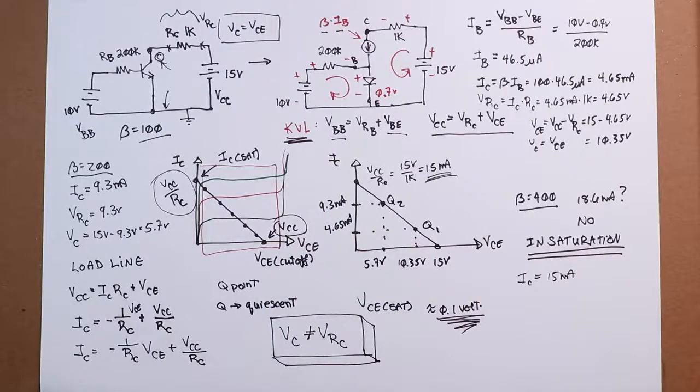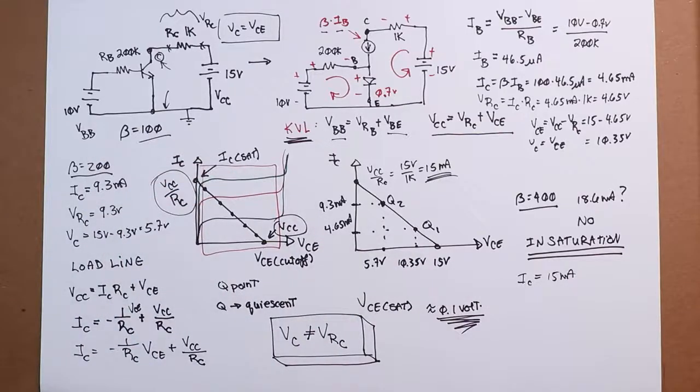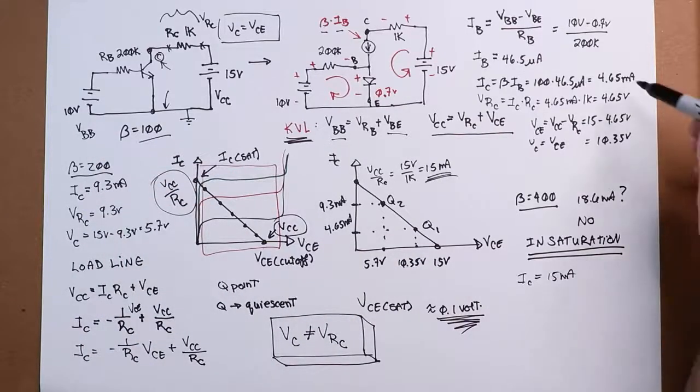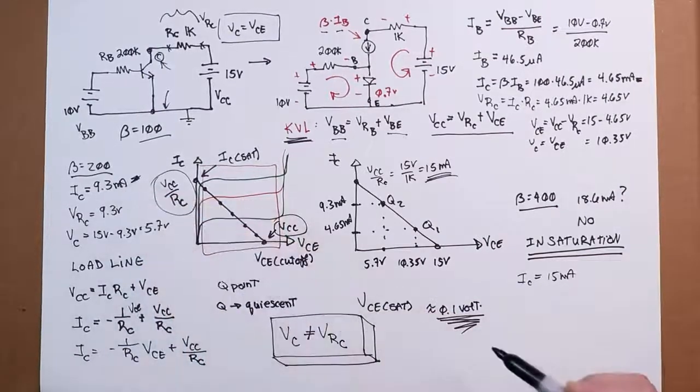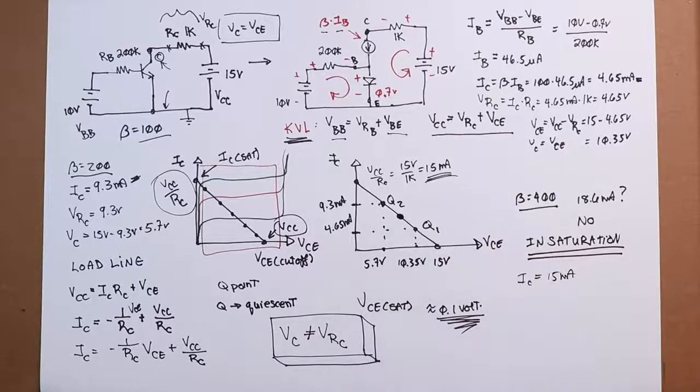One of the issues that we have that we're going to look at in the next video is how to deal with the fact that beta does change. I don't usually like to see this kind of a change. I would actually like to have a situation where the Q point is pretty much always the same, regardless of what happens to the beta. There are good reasons for that, and we'll pick that up next time.